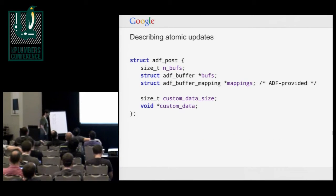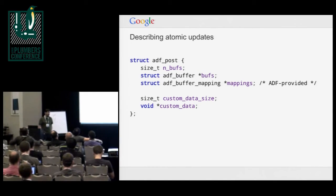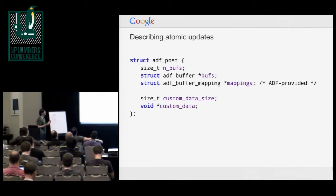A post is specified simply as a collection of buffers. ADF provides additional mapping information — it calls into the DMA buf framework to map the buffer into the device when it comes from the client. The actual specification of the configuration — position of buffers on screen, blending parameters, scaling, and so on — is stored inside what is effectively a custom binary blob, a private structure to your driver that specifies how the screen is laid out.